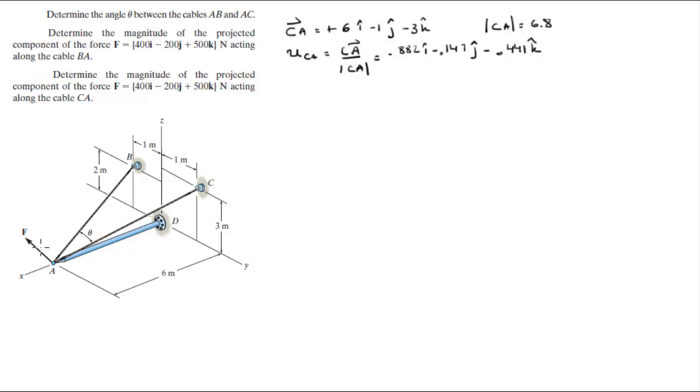Now if you want to find the projection of F along CA, you got to do the dot product with the univector CA which is this tiny vector right here with a magnitude of 1. So F dot UCA is F which is given 400I minus 200J plus 500K dot 0.882I minus 0.147J minus 0.441K.